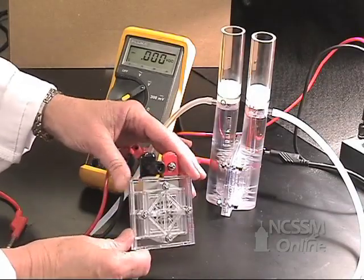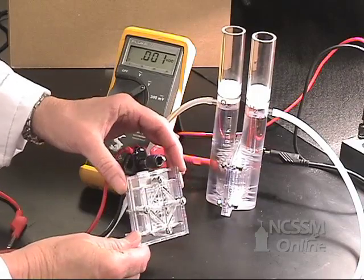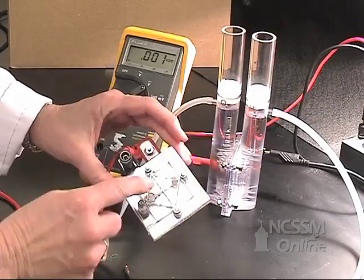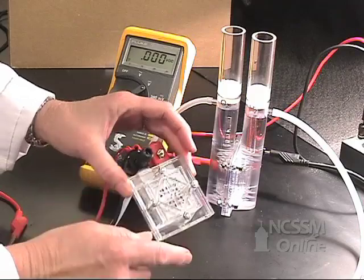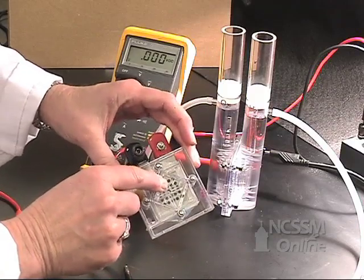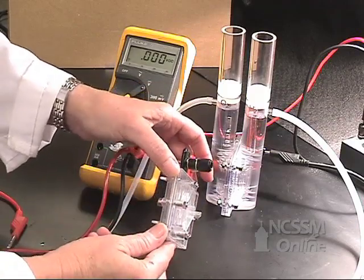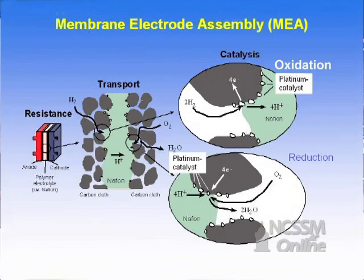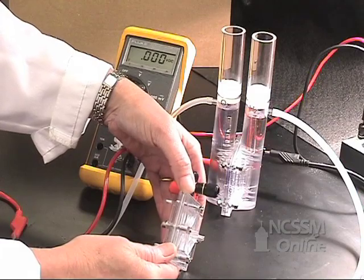This is a fuel cell, and a fuel cell is constructed by having a membrane right here. The membrane is a polymer layer that has carbon filament embedded with platinum, and that's acting as a catalyst.